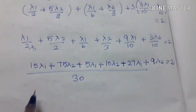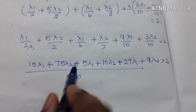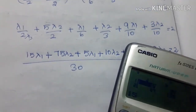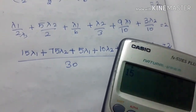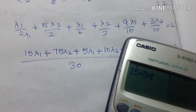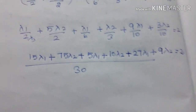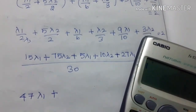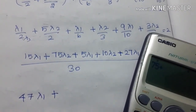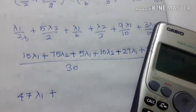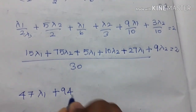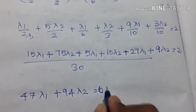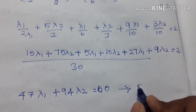After combining terms, we get 27 lambda1 plus 9 lambda2 equal to 2. Now lambda1 and lambda2 coefficients are available. So first: 15 plus 5 plus 27 gives 47 lambda1, plus 75 plus 10 plus 9 gives 94 lambda2, equal to 60. This is the fifth equation.